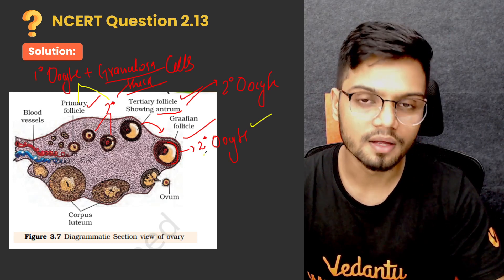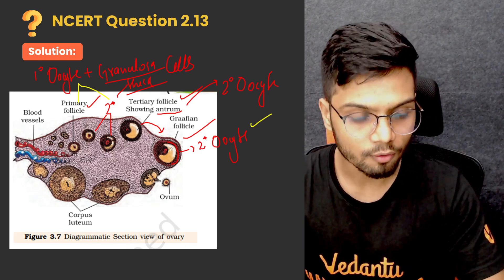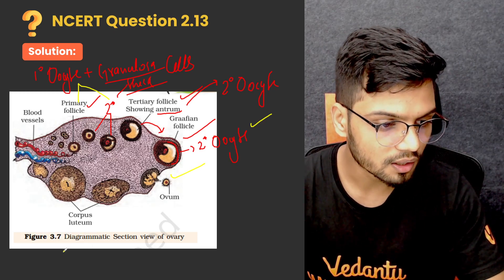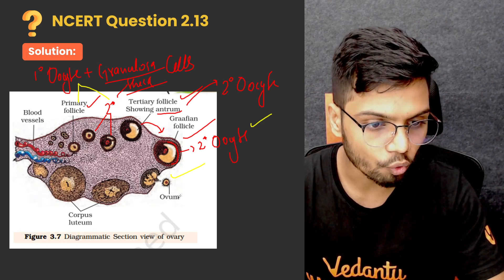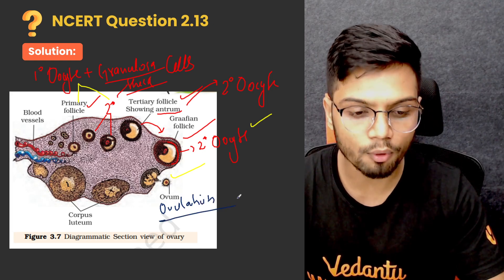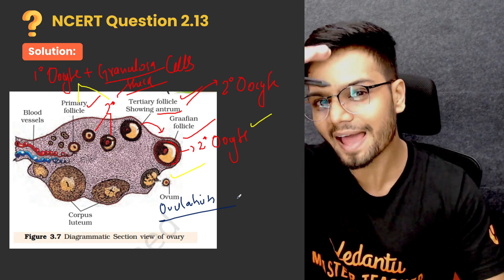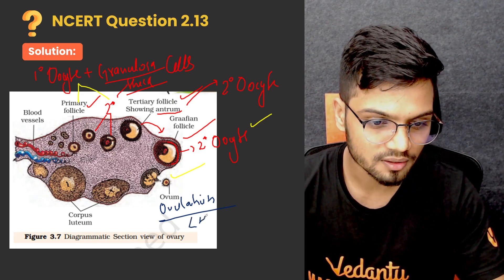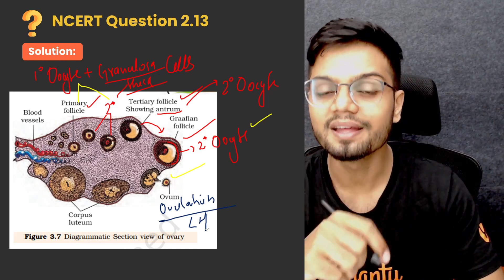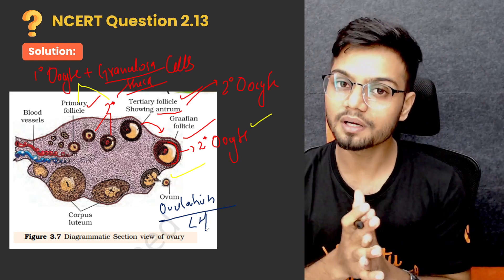The secondary oocyte becomes the ovum after the second meiosis, which results in the formation of the ovum. The ovum is released by the rupturing of the Graafian follicle, and the process is known as ovulation. Ovulation happens on the 14th day of the menstrual cycle because of the LH surge — the increased levels of LH at the 14th day is when the ovum is released.